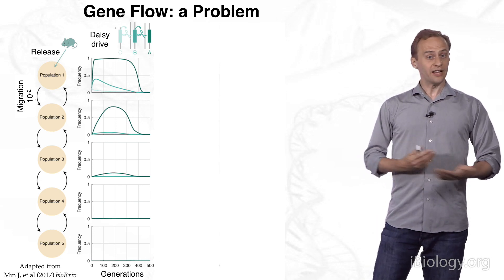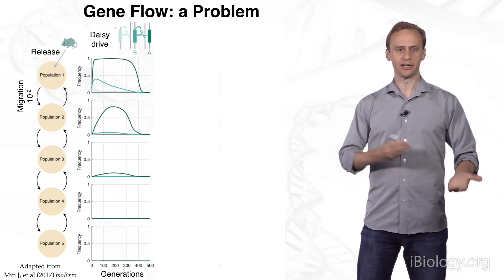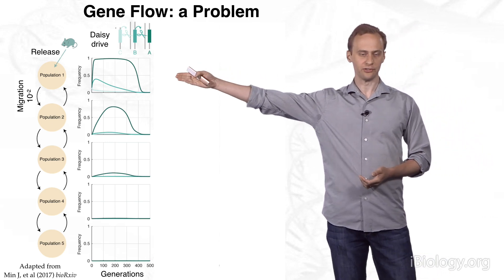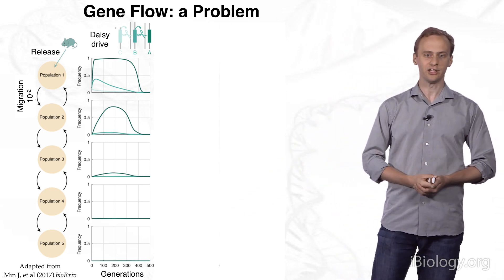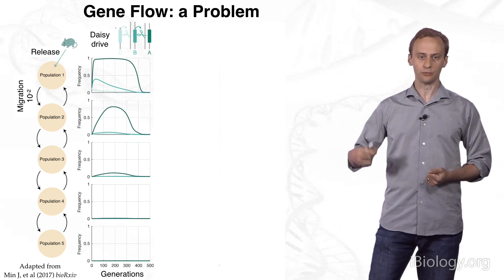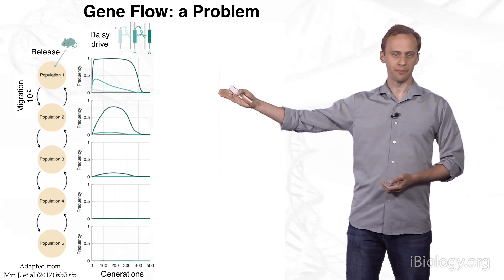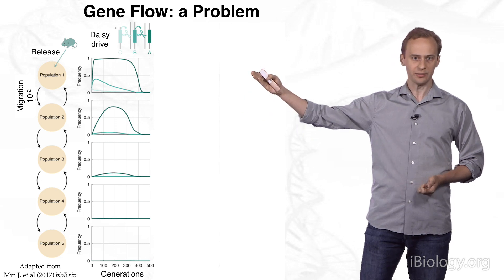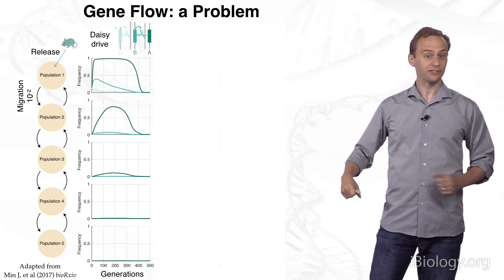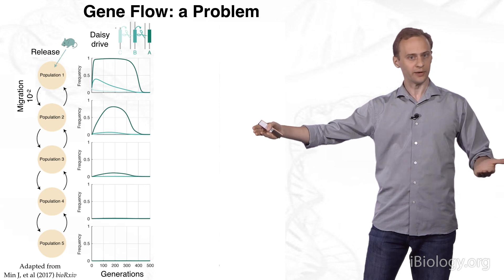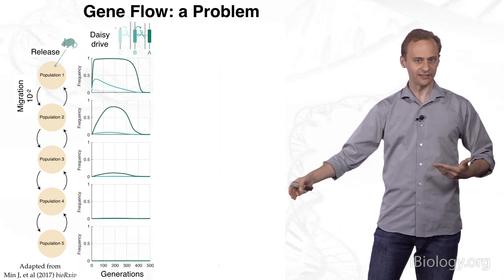The problem for DAISY drive, and indeed for all of these, is that of gene flow. Let's assume that we have a number of interconnected populations, and we're going to introduce the drive system into one, and it's going to spread through other populations. Each of these is connected by a comparatively low level of gene flow. For the DAISY drive, you introduce it into the first population at a high enough frequency, it will rise to very high frequency, and then after a couple hundred generations, it will go down to zero. That's in population one. But in connected population two, it also reaches a reasonably high frequency before going back down, and there's a little bit that makes it into three, and basically none into four and five.